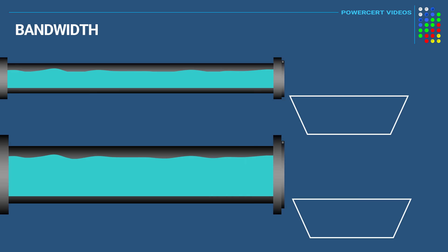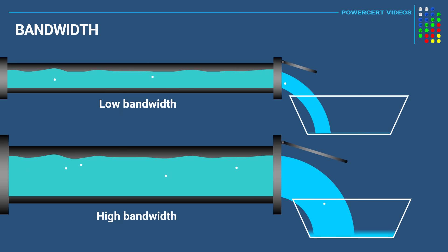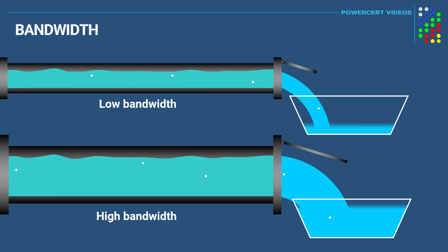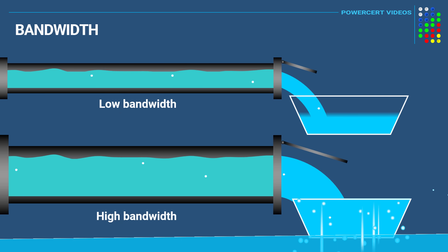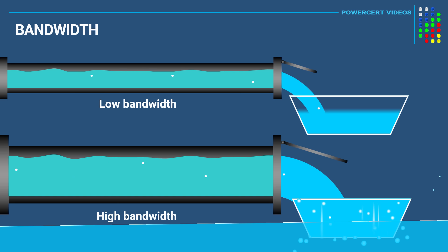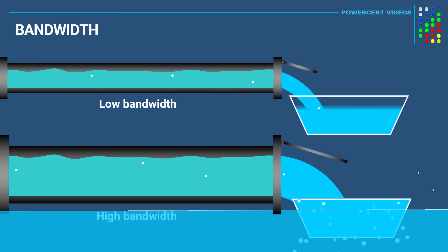The smaller diameter pipe will represent a lower bandwidth connection, and the larger diameter pipe will represent a higher bandwidth connection. As you can see, the flow of water is traveling at the same rate in both pipes. But since the bottom pipe is wider than the top one, it's able to flow a lot more water at the same time, which can fill up the container at the other end a lot faster.